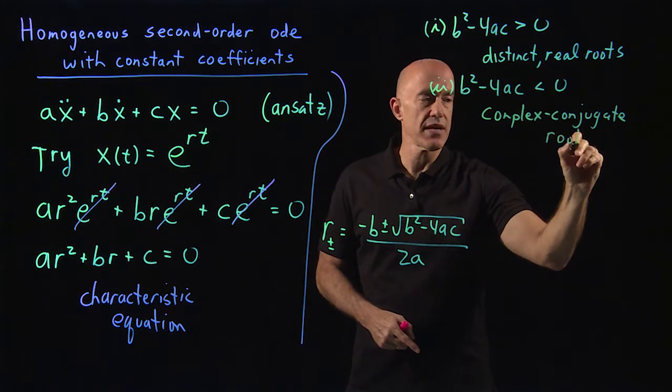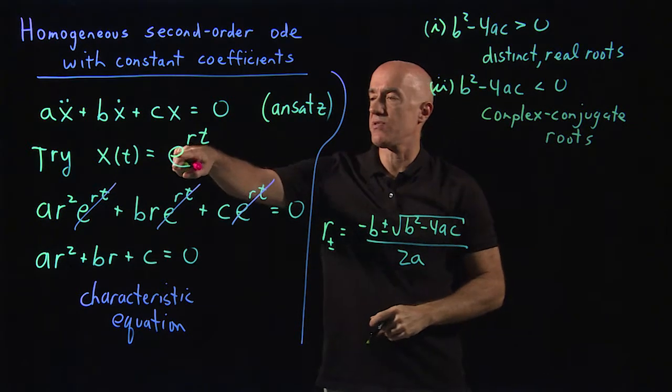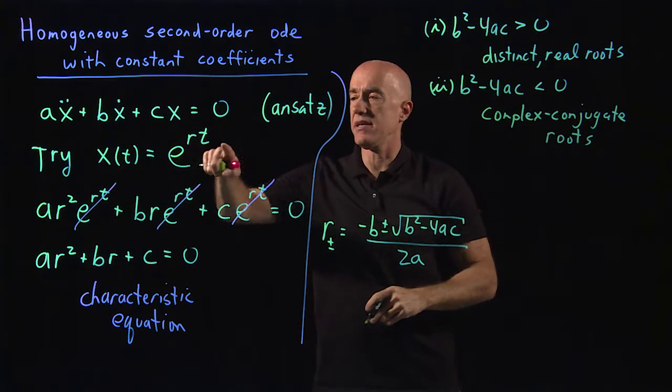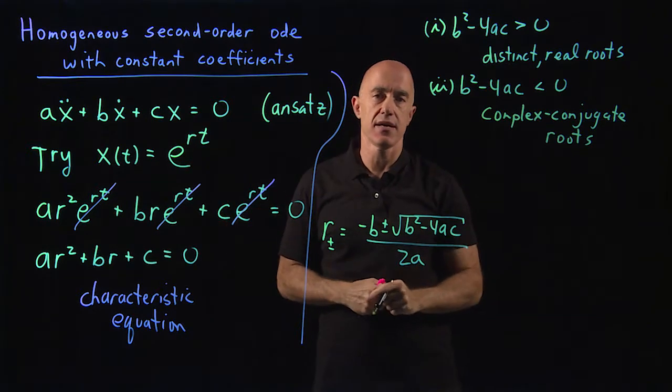So in this case we're going to have to understand how do we interpret e to the rt when r is complex.